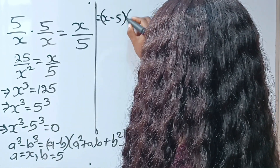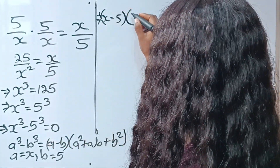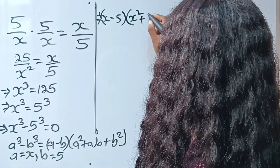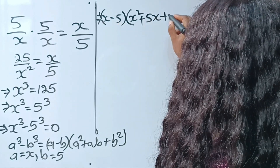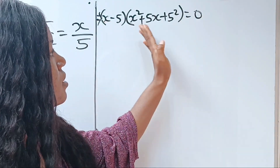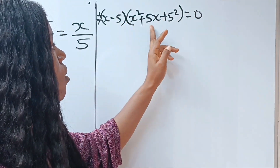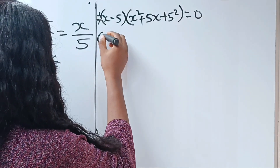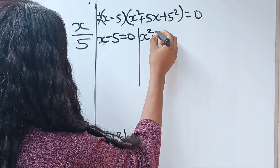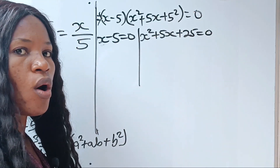So we have x minus 5, multiplied by a squared which is x squared, plus ab that is plus x times 5 which is 5x, plus b squared that is 5 squared, and everything is equal to 0. Now we have this bracket multiplied by this bracket equal to 0, which simply means that x minus 5 is equal to 0, or x squared plus 5x plus 25 is equal to 0.